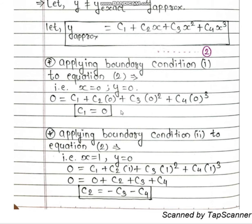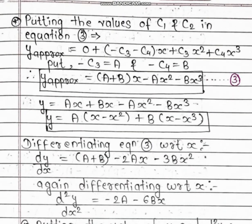Now we put the values of c1 and c2 into equation number 2. After substitution, we get: y_approximate = (−c3 − c4)x + c3·x² + c4·x³. We then substitute a = −c3 and b = −c4, giving: y_approximate = ax + bx − ax² − bx³. We rename this as equation number 3.